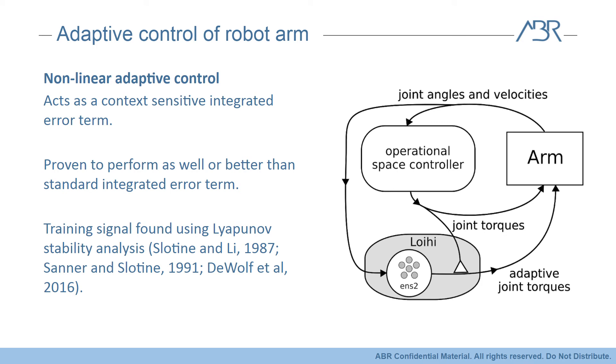The circuit design this time is much simpler, because we're just augmenting an existing controller with a single population of neurons running on the Loihi, where we take advantage of the on-chip learning through Nengo's API. So, the feedback from the arm is sent to the base controller and the neurons, and the base controller's output is used as the training signal for the adaptive ensemble.